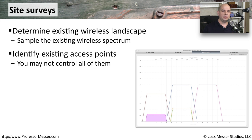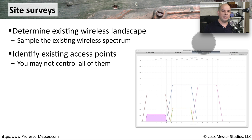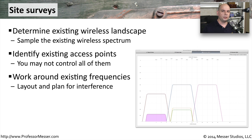It's very common to initially try to understand where all of the other access points might be. You might see these pop up in an SSID list, or you might use a specialized scanner to be able to understand where the access points are. You may not even be in control of every single one of those. You may be in an office environment where there are different companies on different floors, so all of the wireless networks may not necessarily be something that you are able to change. That means you'll have to work with what's currently in place and try to get your wireless network to have the best possible performance regardless of what happens to be around you. This means you'll want to do as much research as possible.